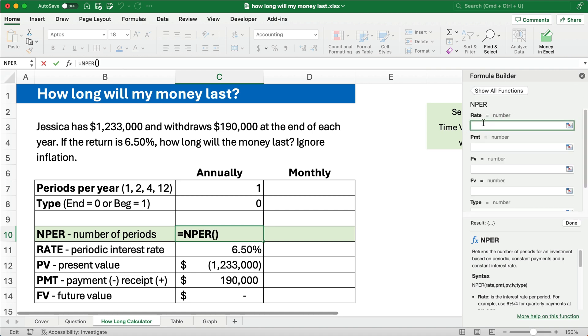So I need to know the rate. Well, the rate is six and a half percent, but I'm going to go ahead and divide it by the one, which mathematically won't make a difference. But if we do it monthly, then we need to take that six and a half percent divided by 12 months. So just kind of get in the habit of doing that and that's going to be helpful. The payment is already a positive $190,000. We're receiving $190,000, but what are we paying? We've basically invested $1,233,000. That's already a negative number. The future value is going to be zero.